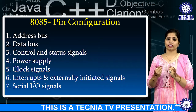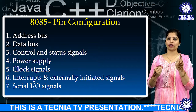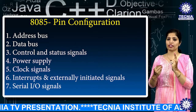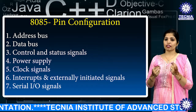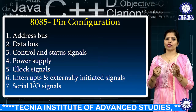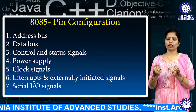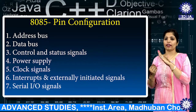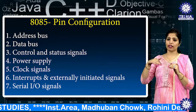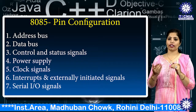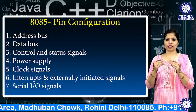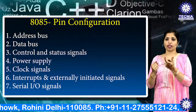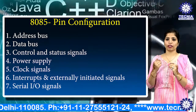The three status signals are IO/M, S0, and S1. IO/M differentiates between I/O and memory operations: when high it indicates I/O operation, when low it indicates memory operation. S1 and S0 are used to identify the type of current operation.